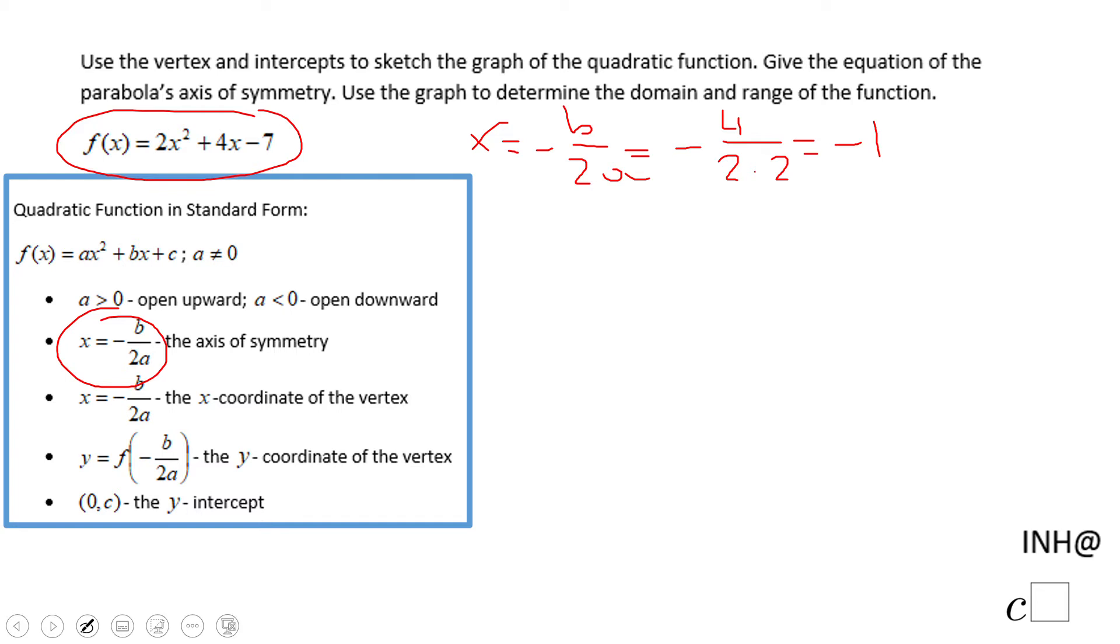For finding the y-coordinate of the vertex, we're going to take this negative 1 and plug it in. We're going to have 2 times negative 1 squared plus 4 times negative 1 minus 7. That will be 2 times 1, plus 4 times negative 1 minus 7. So that will be 2 minus 4 minus 7, which equals negative 2 minus 7, negative 9. So the vertex is negative 1, negative 9.